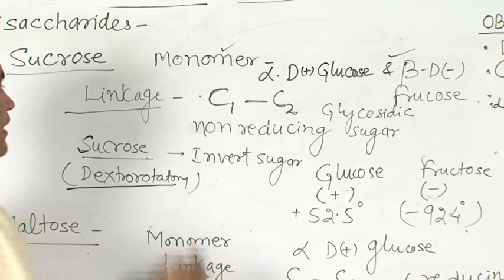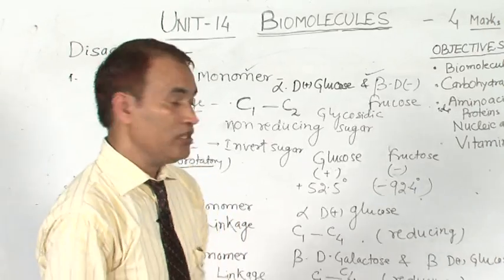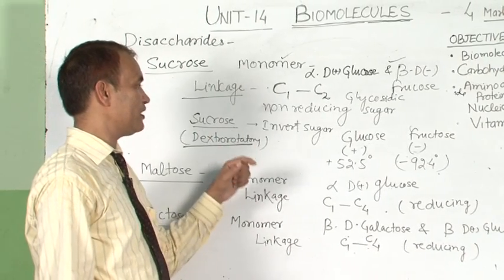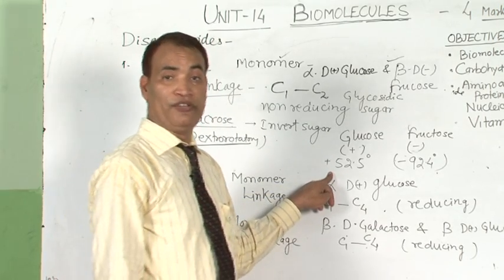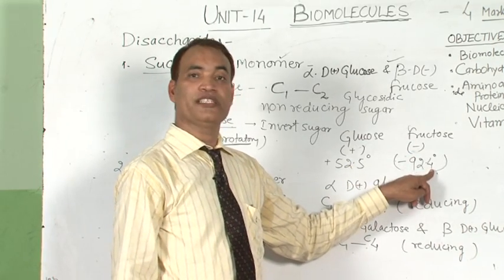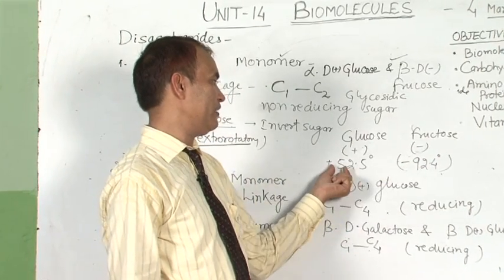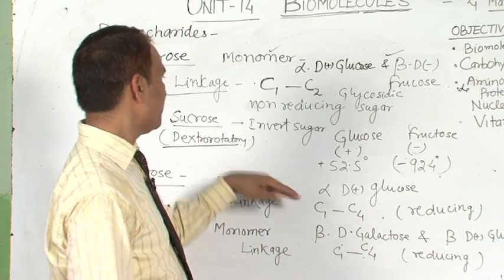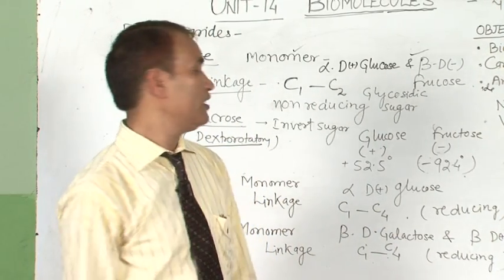Sucrose is known as invert sugar. The question can be asked: why is sucrose called invert sugar? Sucrose is dextrorotatory in nature, but on hydrolysis it gives glucose, which is dextrorotatory with specific rotation +52.5, and fructose with rotation −92.4. Fructose is levorotatory, and overall the mixture becomes levorotatory because −92.4 is greater in magnitude than +52.5. That is why on hydrolysis the dextrorotatory sucrose is converted to a levorotatory mixture — hence it is known as invert sugar.